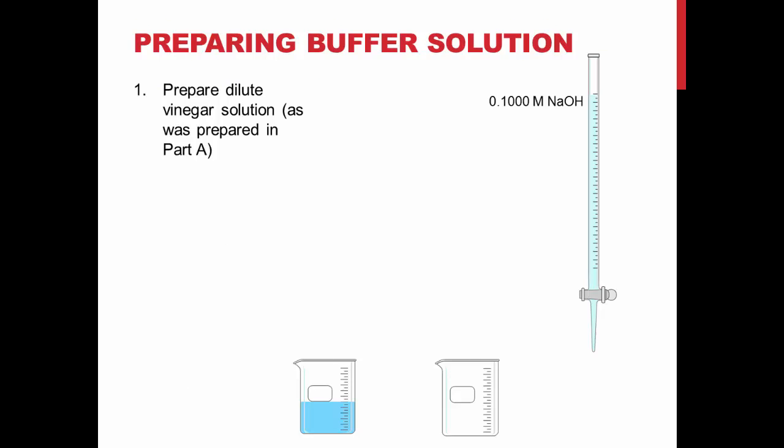To prepare a buffer solution, you will first need to make a dilute vinegar solution the same way you did in Part A of this experiment. Pipet 10 mL of the provided vinegar solution into a 100 mL volumetric flask and dilute to the mark with deionized water.